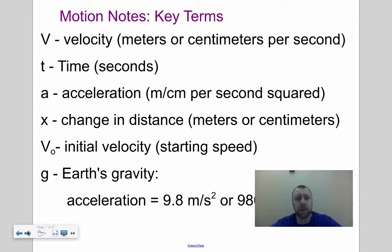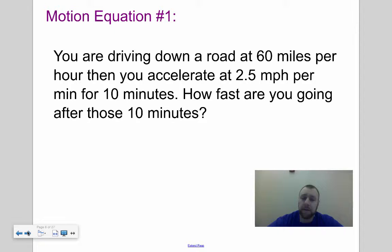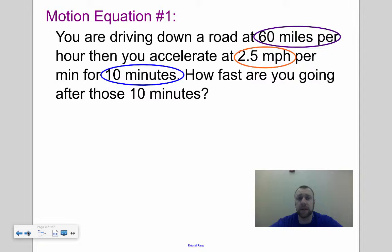Let's start with motion equation number one. You can actually derive it yourself. Let's talk through this example. You're driving down a road at 60 miles per hour, then you accelerate at 2.5 miles per hour per minute for 10 minutes. How fast are you going after those 10 minutes? So you're going to start off at 60 miles per hour. You're accelerating, you're going faster, 2.5 miles per hour every minute, and you're going to accelerate for 10 minutes.